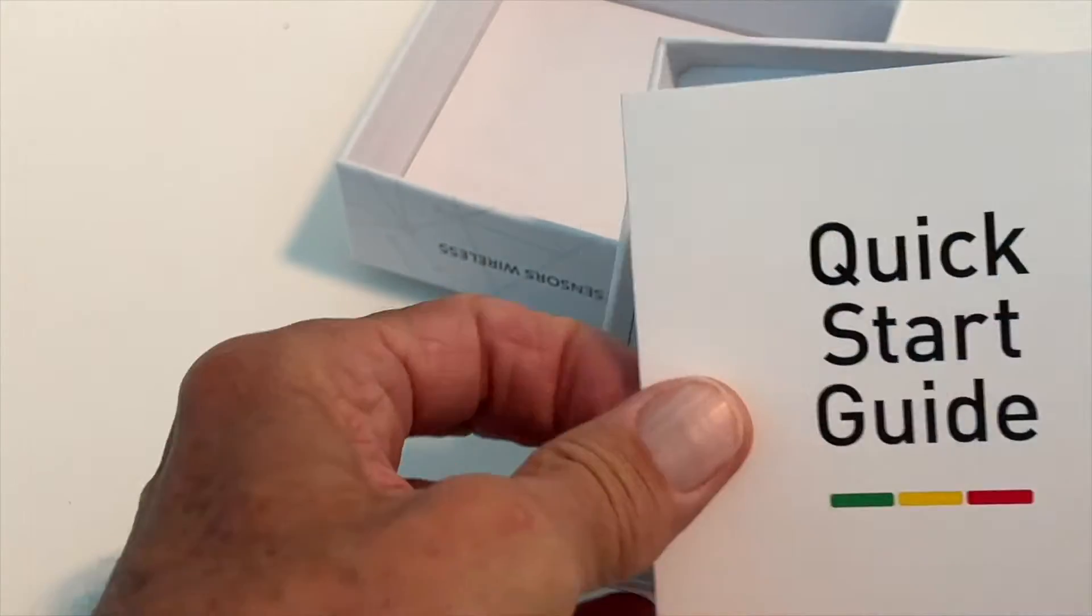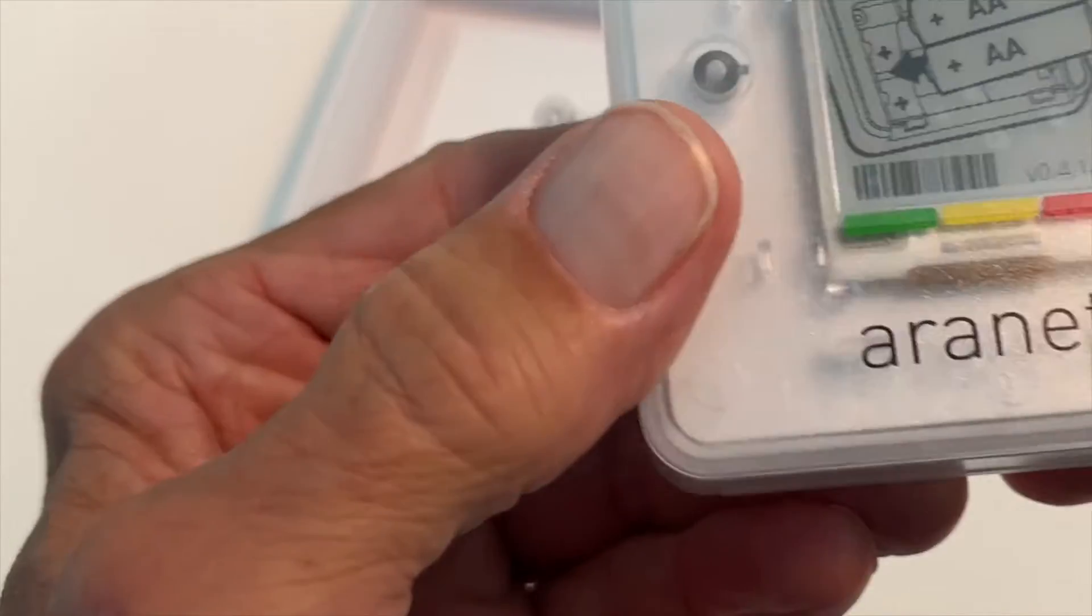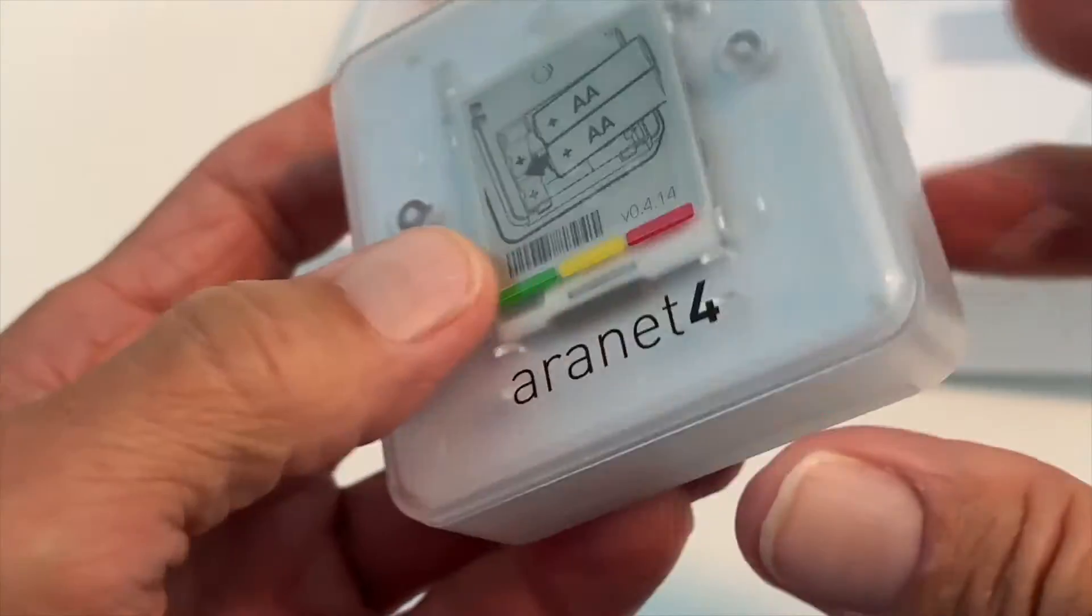All right, so when you open up the box, you're going to see there is a quick start guide that gives you all the information about the unit itself. If you pull it out, you're going to look on the front. It shows you how to put the batteries on. They've got a little diagram there, so that's going to make it easy.